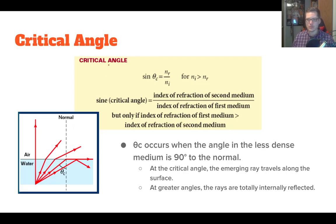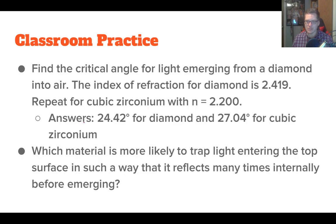What is this critical angle? It's actually pretty easy to calculate. The critical angle is simply the sine of theta critical is equal to nr over ni. ni always has to be bigger than nr, and that makes sense because you can't take the sine of bigger than 1 anyway. Your critical angle occurs when the angle in the less dense medium is 90 degrees to the normal. At the critical angle, the emerging ray travels along its surface, and then any greater angles, the rays are totally internally reflected. Let's do some practice problems.